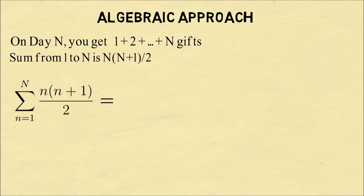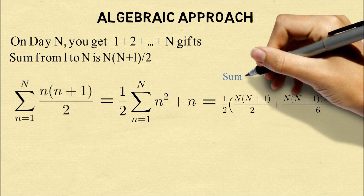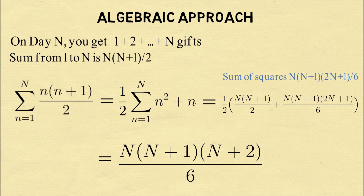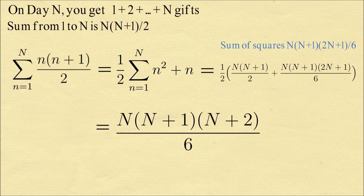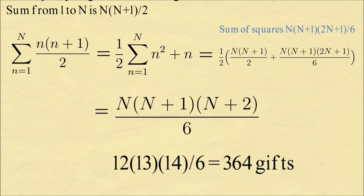So we sum this up from day one to day n, and this equals one-half times the sum of n squared plus n. We can solve this because n times (n plus one) over two is the sum of n, and the other term — n times (n plus one) times (2n plus one) over six — is the sum of the squares. That's another known formula. We simplify this and we get n times (n plus one) times (n plus two) over six as the formula. And when we try that out for n equals twelve, we in fact verify we have 364 gifts.